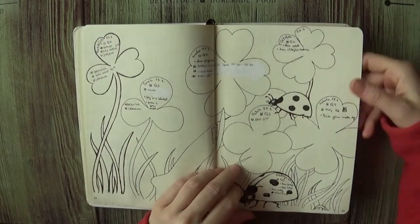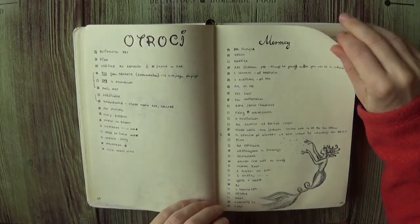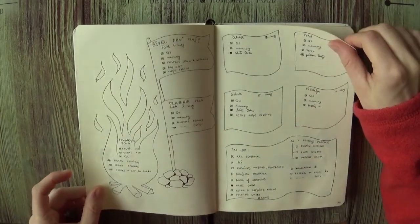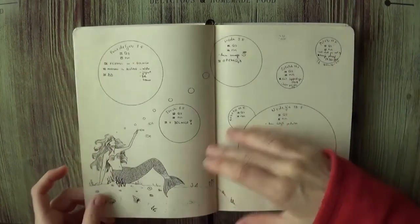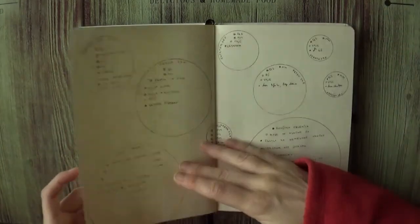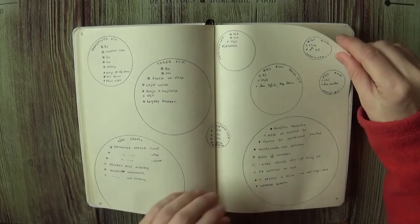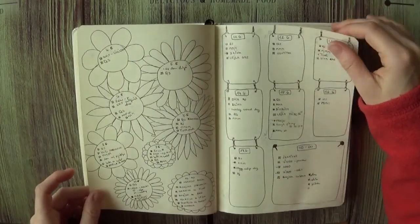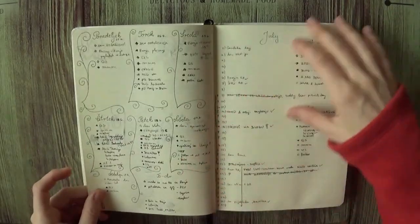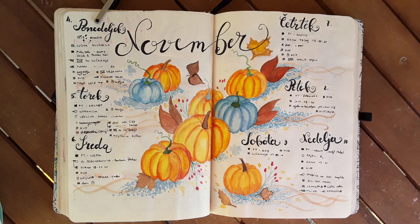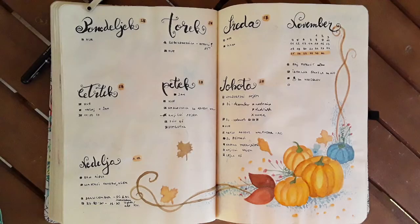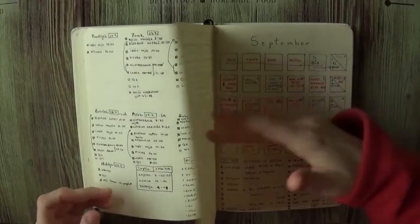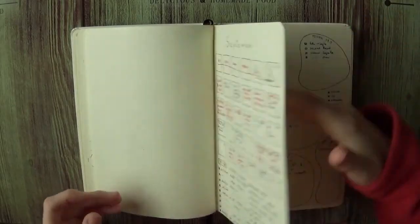I use the system called bullet journal and you can read more about that at its creators page. But in a nutshell it's just a notebook, a simple notebook, and all you need is a notebook and a pen. There are of course many types of bullet journal and you can make it elaborate or not as you like, but basically you just need a notebook and a pen.